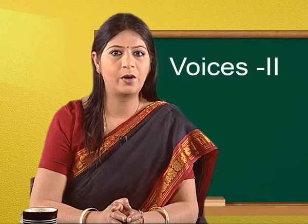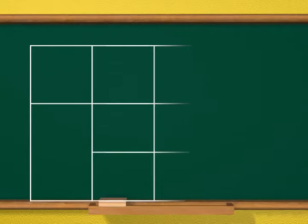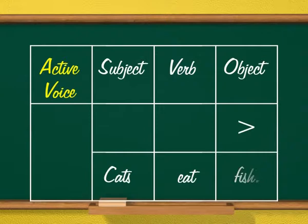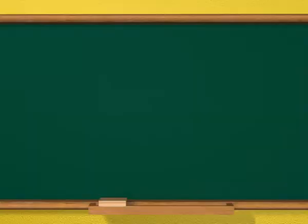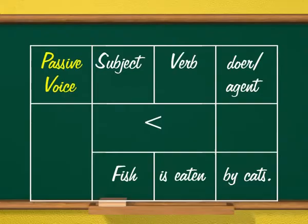Many a times, we think that just by changing one or two words in a sentence, the voice has changed, but that is not so. Let us look at the table. In active voice, the sentence is 'cats eat fish,' where cats is subject, eat is verb, and fish is object. In the passive voice, the subject receives the action of the verb. Here, fish is subject, is eaten is verb, and by cats is doer or agent.